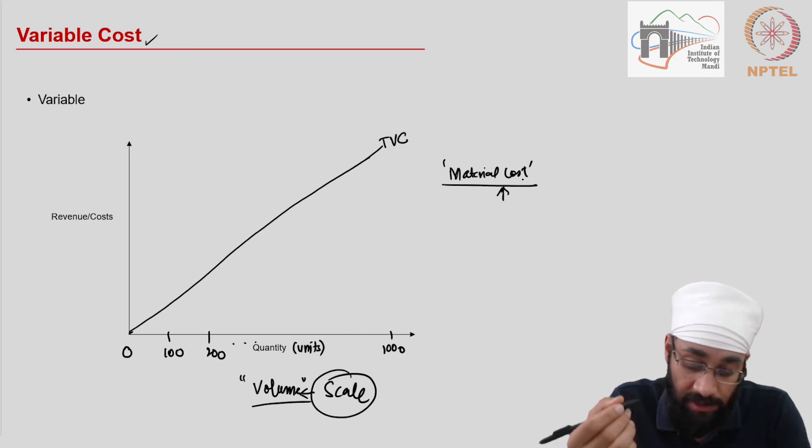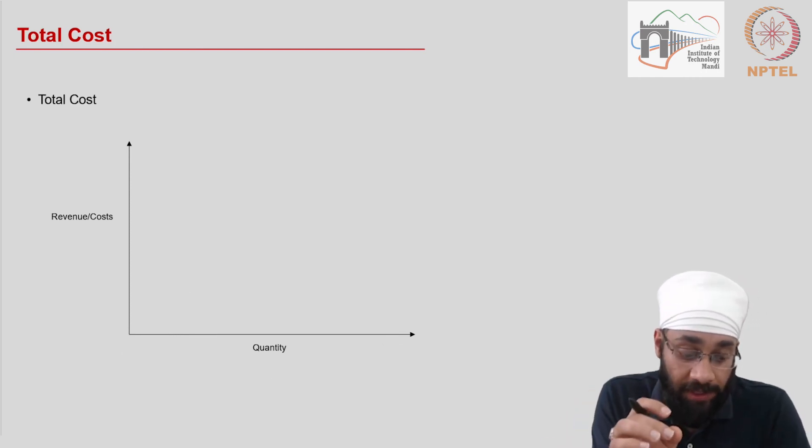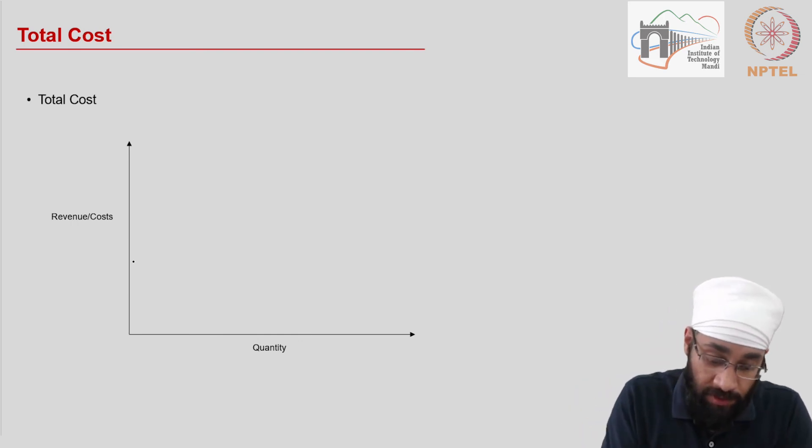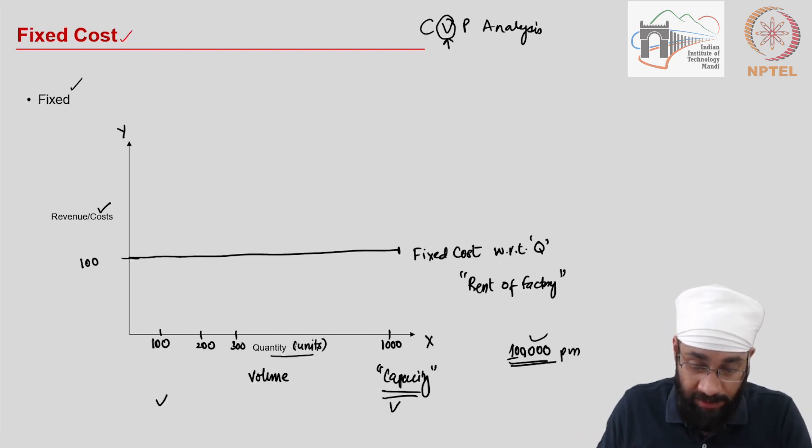All right, and the fixed cost and the variable cost together make up the total cost of the product. So the total cost in this case is going to be equal to the fixed cost plus the total variable cost. Now looking at these two graphs, the previous two graphs, we know if we have to come up with the total cost we will add up the two. So 100 plus 0.